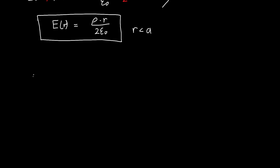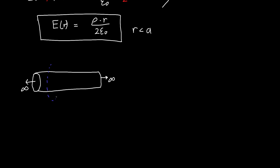Now what about a radius outside the cylinder? We redraw our infinite cylinder, and we'll want a Gaussian surface that's bigger than the cylinder — one that fully encapsulates it, with radius r greater than a. Other than that, the process is exactly the same.